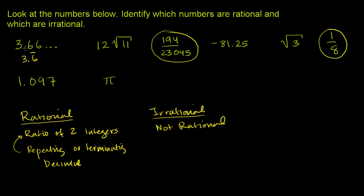So if you believe what I just told you, that repeating decimals can be represented as the ratio of integers, then 3.666 and so on with the 6's repeating—this is a rational number.